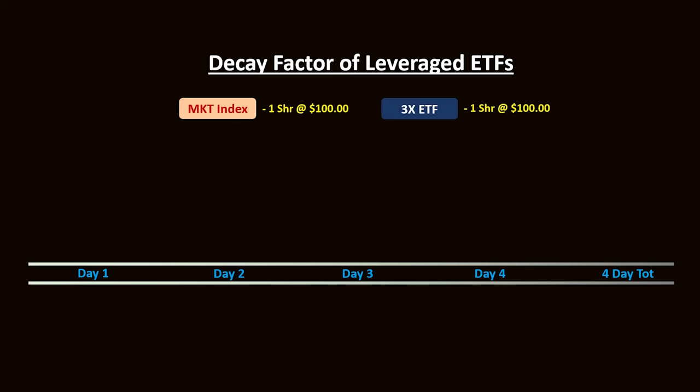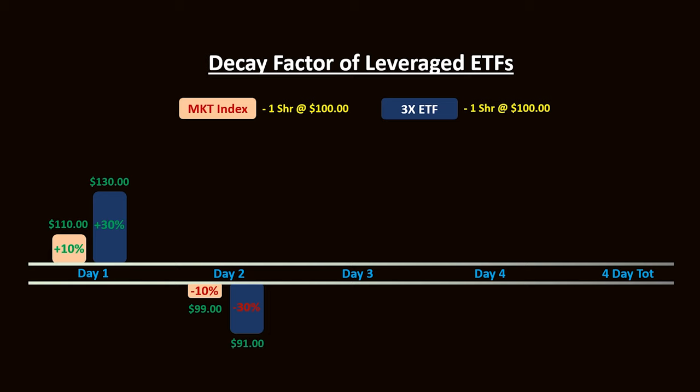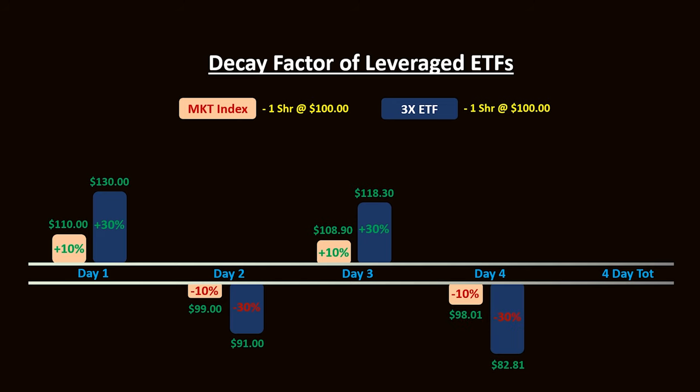Here's a simple example that explains what I mean. Suppose you buy one share of a triple leveraged ETF at $100. On day one, the market goes up 10%, which means the tracking index goes up to $110 and the 3x ETF goes up to $130. On day two, the market goes down 10%, which means the tracking index goes down to $99 and the triple leveraged ETF goes down to $91. On day three, the market goes up 10%, so the tracking index goes to $108.90 and the triple leveraged ETF goes to $118.30. And on the fourth day, the market goes down again 10%, which means the tracking index goes to $98.01 and the triple leveraged ETF goes down to $82.81.